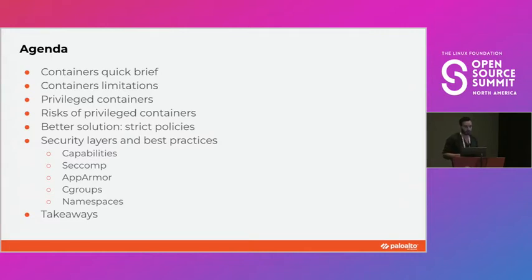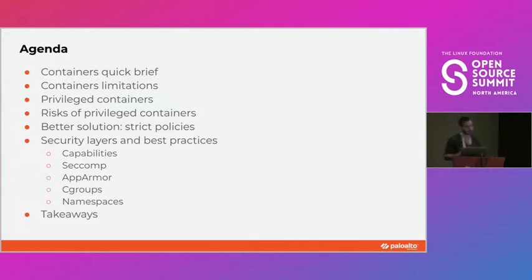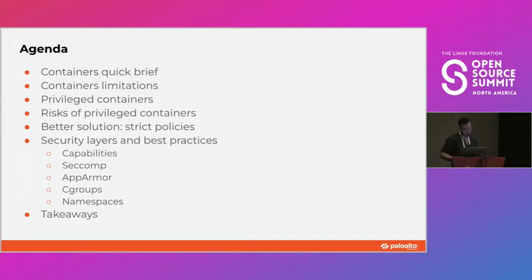Starting with the agenda: we'll do a quick brief about containers, then continue to container limitations — what you can and cannot run inside a container. Then we'll go to the solution of running a privileged container and why this is not the best solution, for example in production environments. Then we'll talk about the better solution: configuring strict security policies for all of the layers — capabilities, seccomp, AppArmor, cgroups, and namespaces — to grant only the additional access privileges required instead of running as privileged. After that, we'll go to the takeaways, which will be more practical.